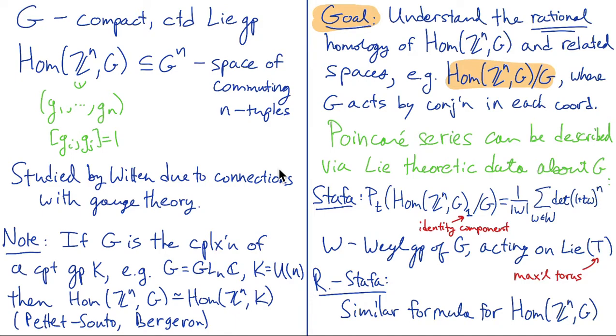So it turns out that the Poincaré series of these spaces can be described via Lie theoretic data about the group G. So one example of that, Stafa gave the following formula. So the Poincaré series, that's the polynomial whose coefficient, where the coefficient of t to the k is the rank of the k-th homology. So it's described in terms of a Weyl group. Also w here is the Weyl group.